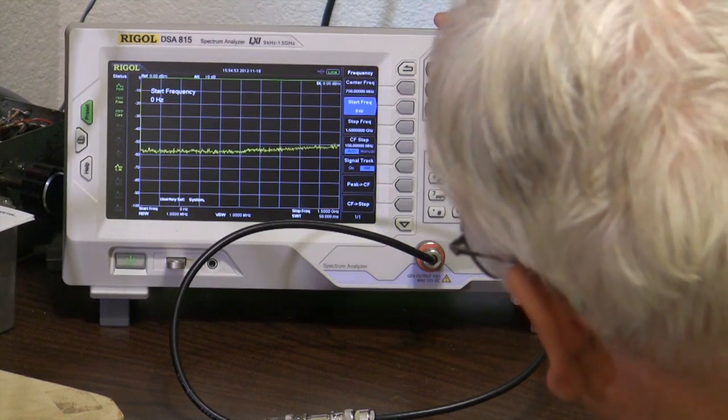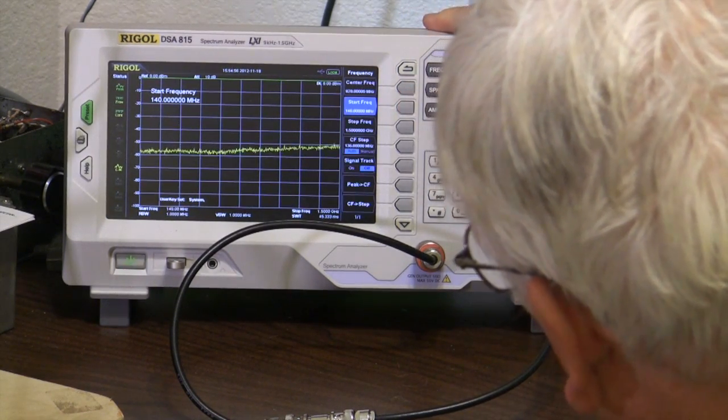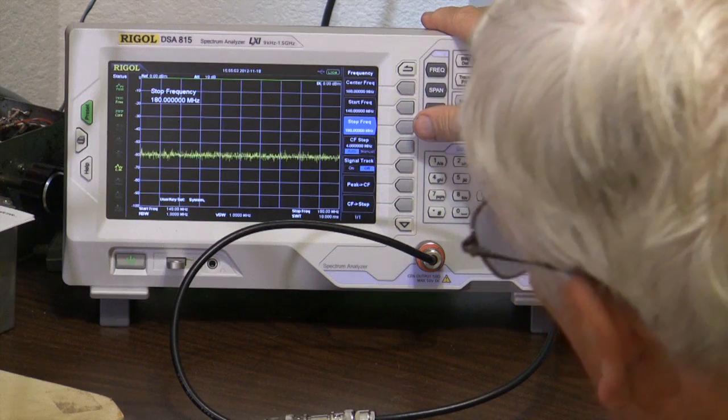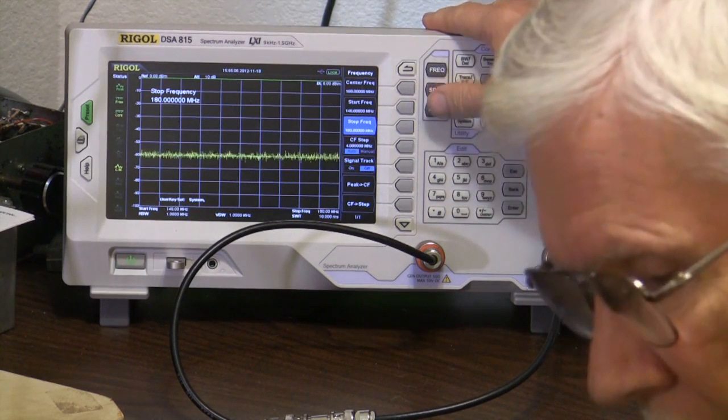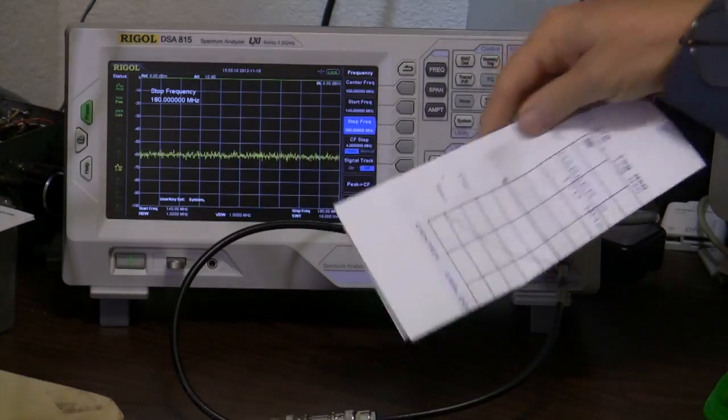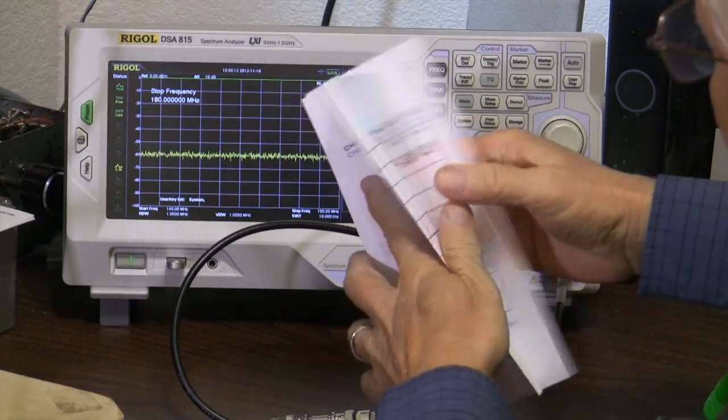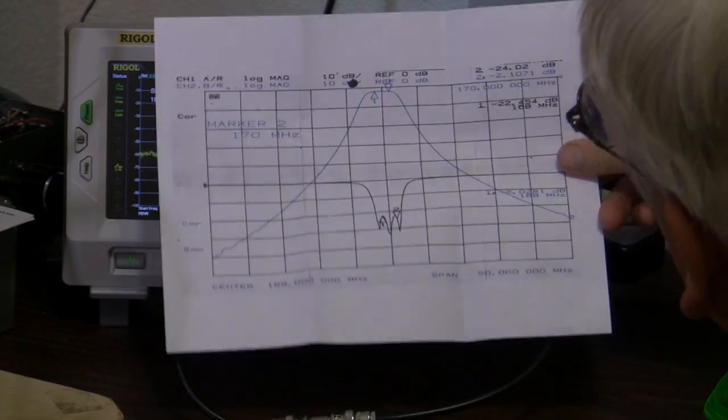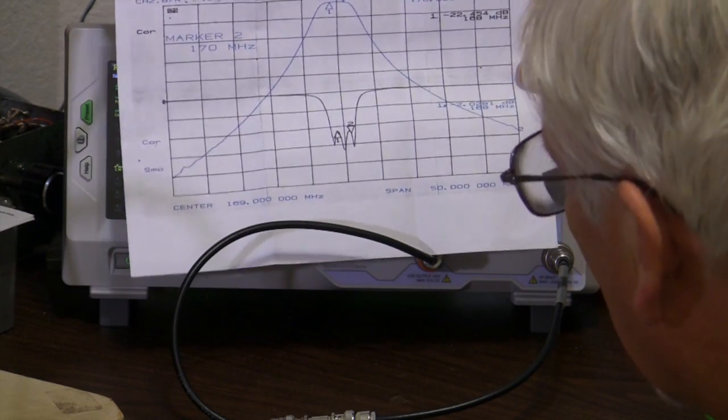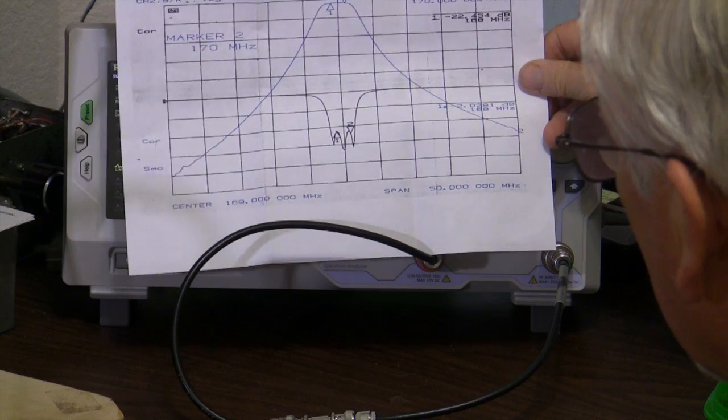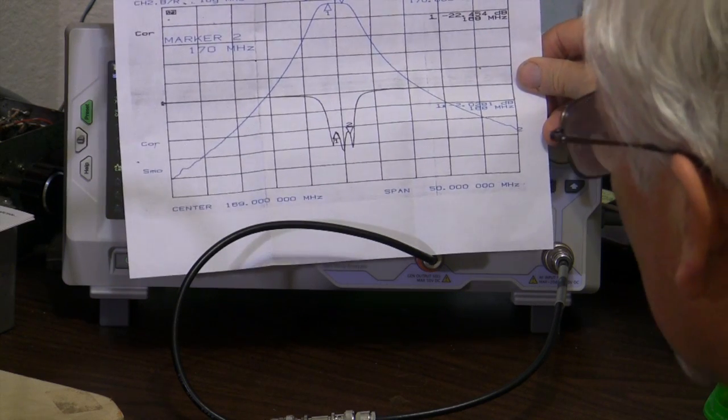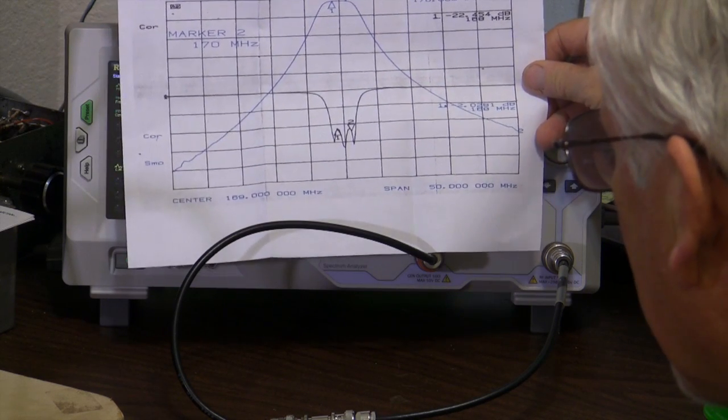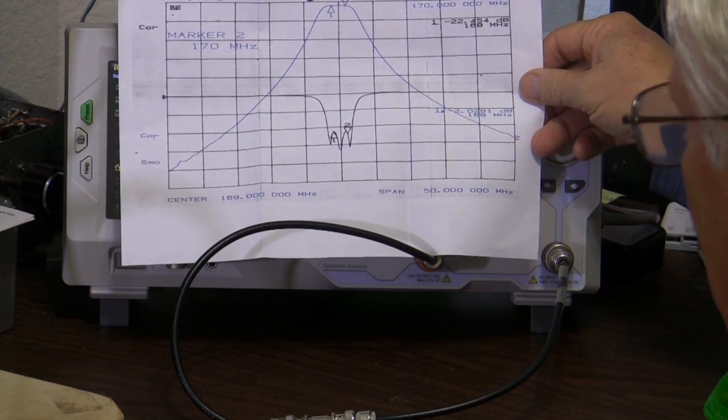So we're going to set the analyzer up to cover about 140 to 180 megahertz. So frequency here start 140 and stop 180 megahertz. However, it turns out that I have a piece of paper here that has the filter as seen on a look like HP sweep generator, or shall we say network analyzer. This is the manufacturer's drawing, or actual plot. So we're going to use this for our purposes.